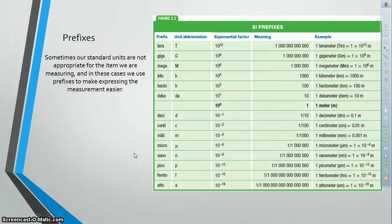Sometimes our standard units aren't appropriate for the item we're measuring. For example, if we're measuring a very long distance and we measure it in meters, we're going to have a very long number with which we express that distance. Whenever our units are not appropriate for what we're measuring, we use prefixes to make the expression of the measurement easier.